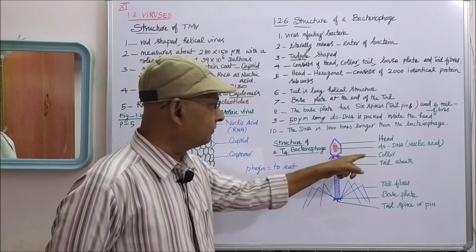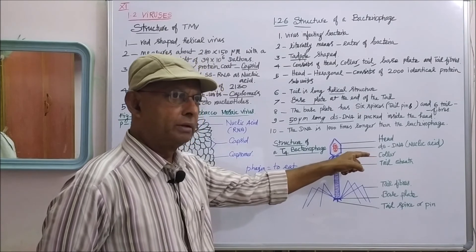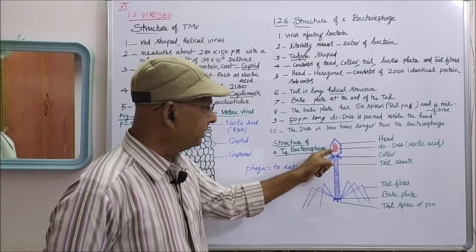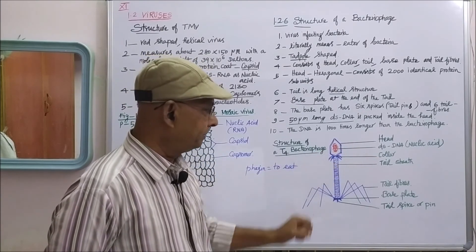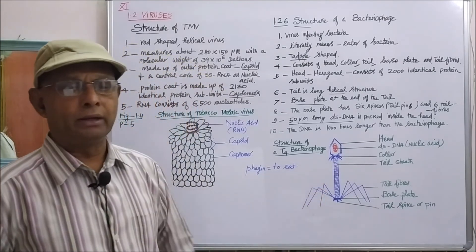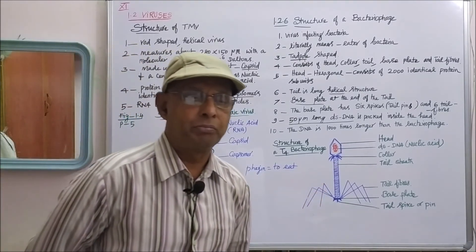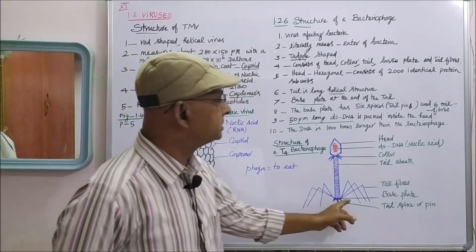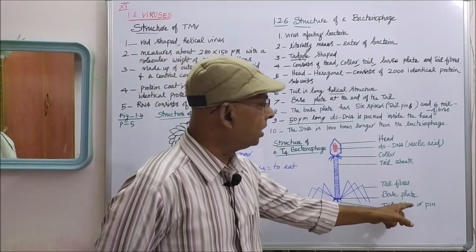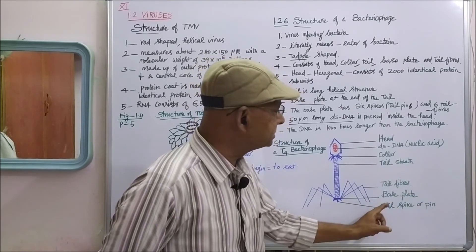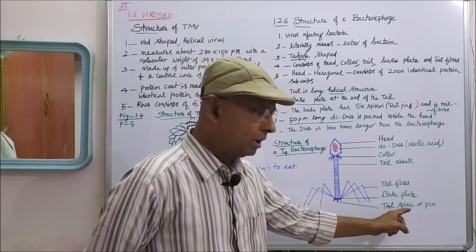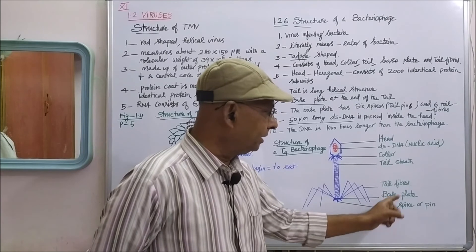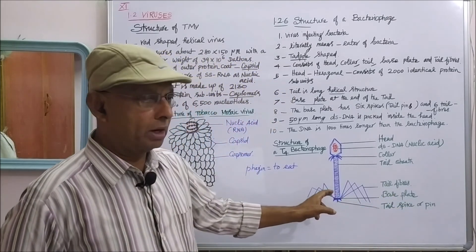The collar can be seen at the junction between the head and the tail. At the end of the tail, there is a base plate. The base plate has six spikes or six tail pins, six tail spikes or six tail pins.